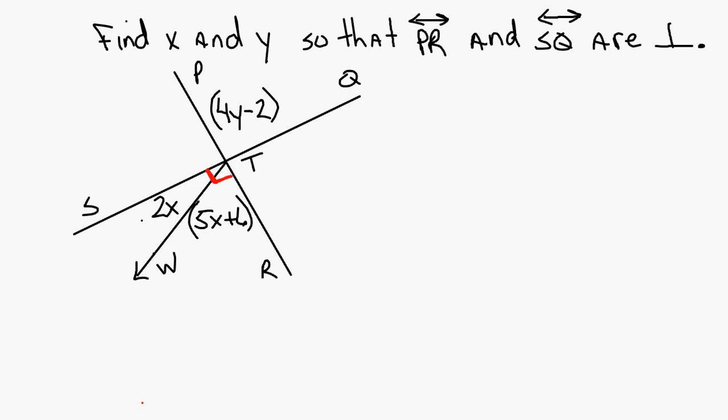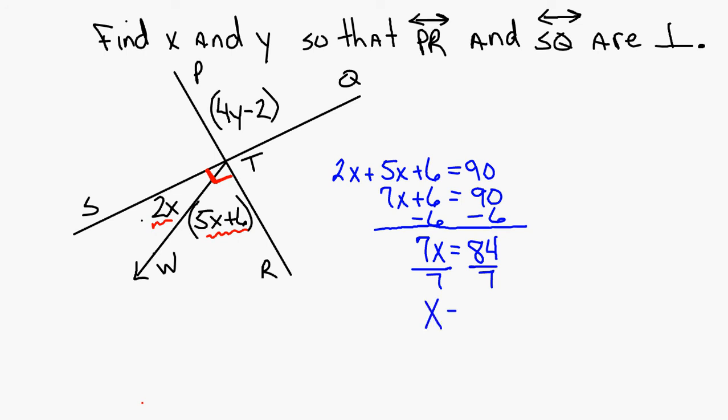So we're looking to make this angle right here equal to 90 degrees. If that angle has to equal 90 degrees, what does this angle plus this angle have to equal? 90 degrees. So for x, 2x plus 5x plus 6, you want it to equal 90 degrees. So 7x plus 6 equals 90. And subtract 6 from each side. 7x equals 84. And divide by 7. So x equals 12.